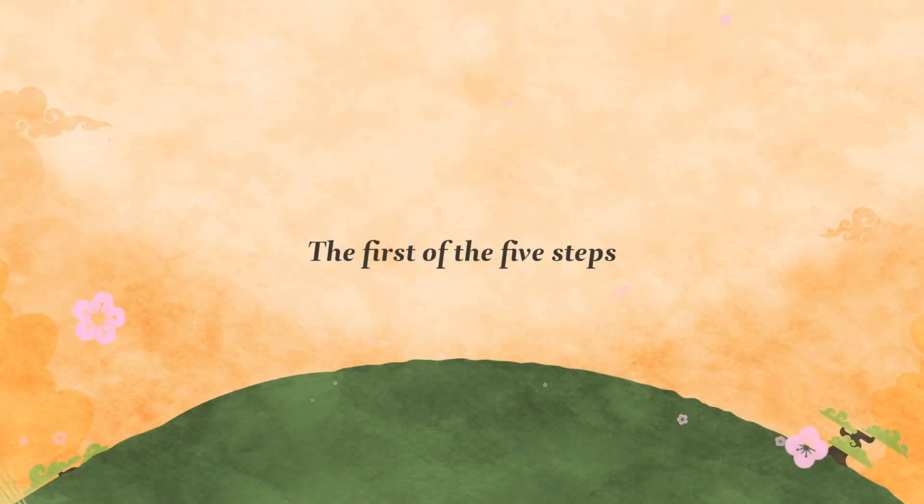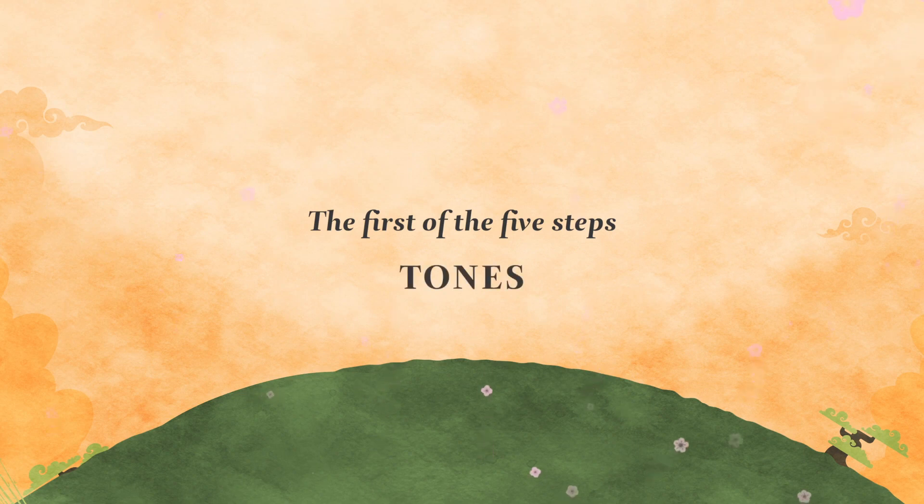The first of the five steps: tones. Mandarin Chinese is a tonal language. This means that each syllable in Chinese has a fixed intonation, which is as essential to the meaning of the syllable as are the vowels and consonants that make up the syllable. There are four tones in Mandarin Chinese.